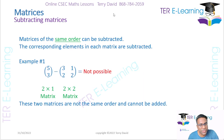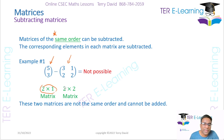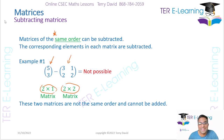Just like when we did addition of matrices, when we are subtracting matrices, they have to be of the same order. So this matrix here is a 2x1 matrix — we have two rows, one column. This matrix here is a 2x2 matrix. The fact that the order of the matrices is different means we cannot subtract those two matrices. The only way we can subtract two matrices is if the order is the same.